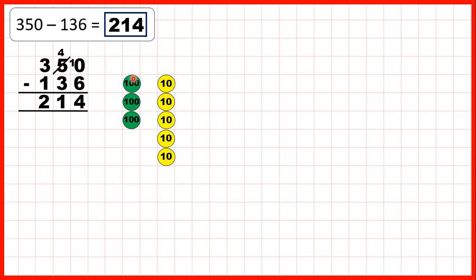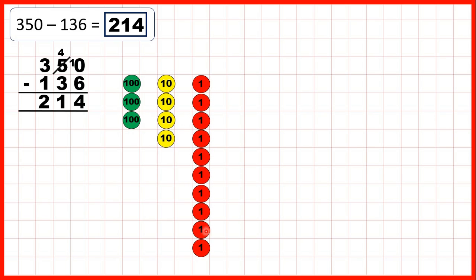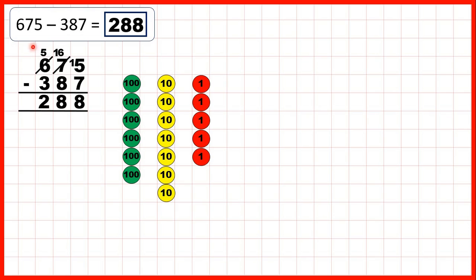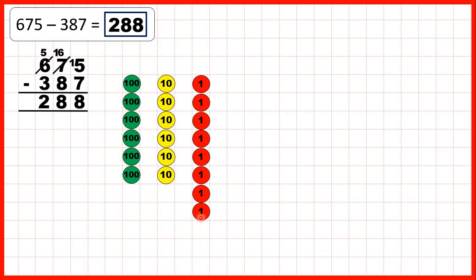Then we started with 350, and to subtract 136 we need to subtract 6 ones. So we exchange 1 of our tens for 10 ones, and then subtracting 6 of those ones leaves us with 4 ones. Now we subtract 3 tens, giving us 1 ten, and we subtract 100 to give us 2 as our hundreds digit. Then we had 675 and were subtracting 387. First we subtract 7 ones, but to do that we'll need to exchange: subtract 1, 2, 3, 4, 5, exchange, then subtract 6, 7 to leave us with 8 ones.